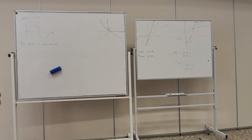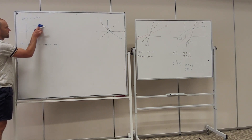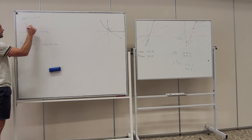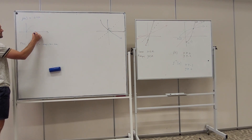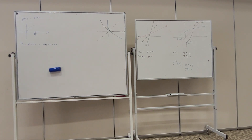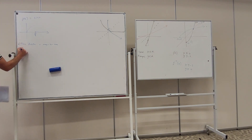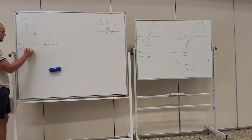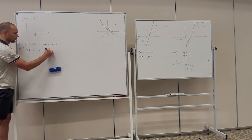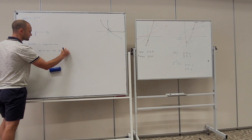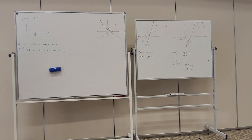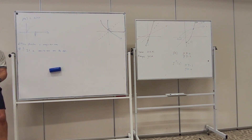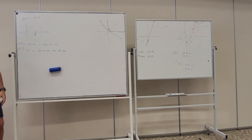This is where we get clever — we restrict the domain of f of x. Consider f of x from 0 to π/2. Now explain why this has an inverse: now that we've restricted the domain, it is a one-to-one function over this region. It passes both the vertical line test and the horizontal line test. Not all functions will have an inverse, but all functions have the capacity to have an inverse if we restrict their domain.